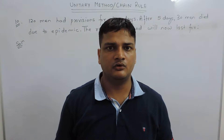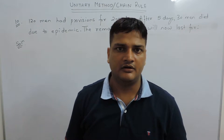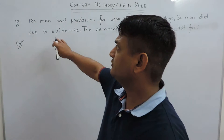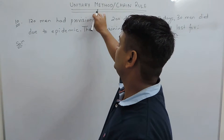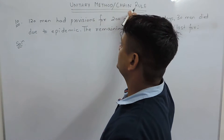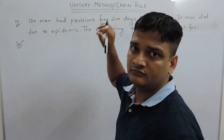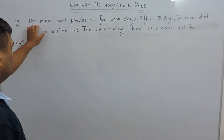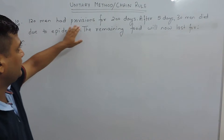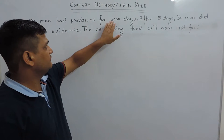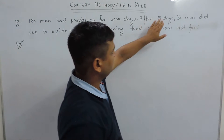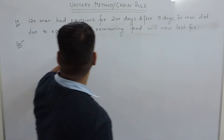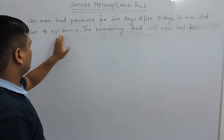Hello, I am Arun Malik and today I am going to solve question number 10 of unitary method or chain rule from RS Agarwal. The question is: 120 men had provisions for 200 days. After 5 days, 30 men died due to epidemic.